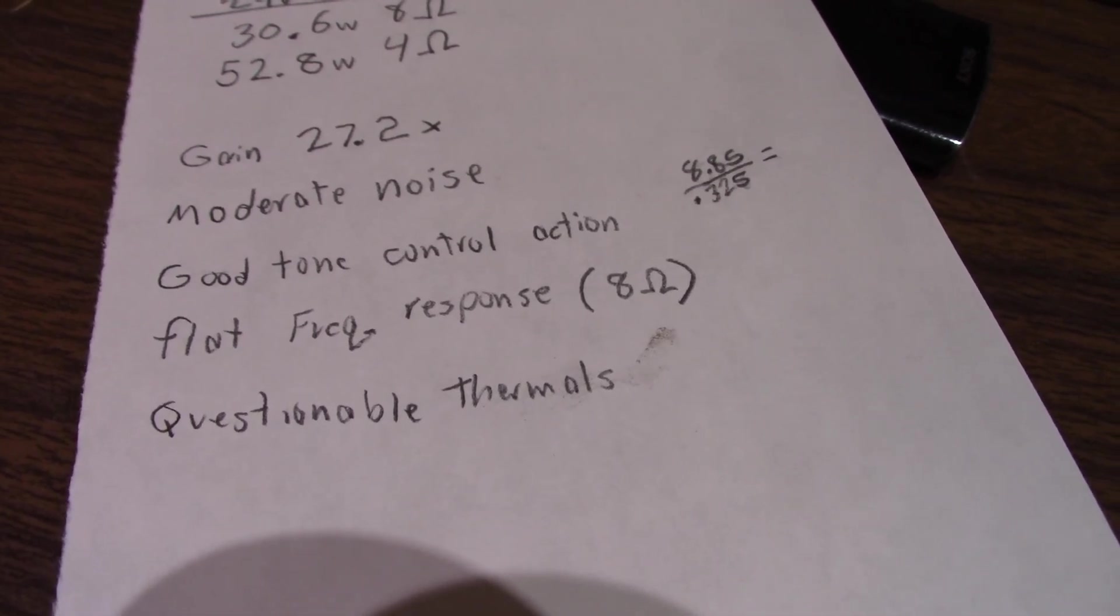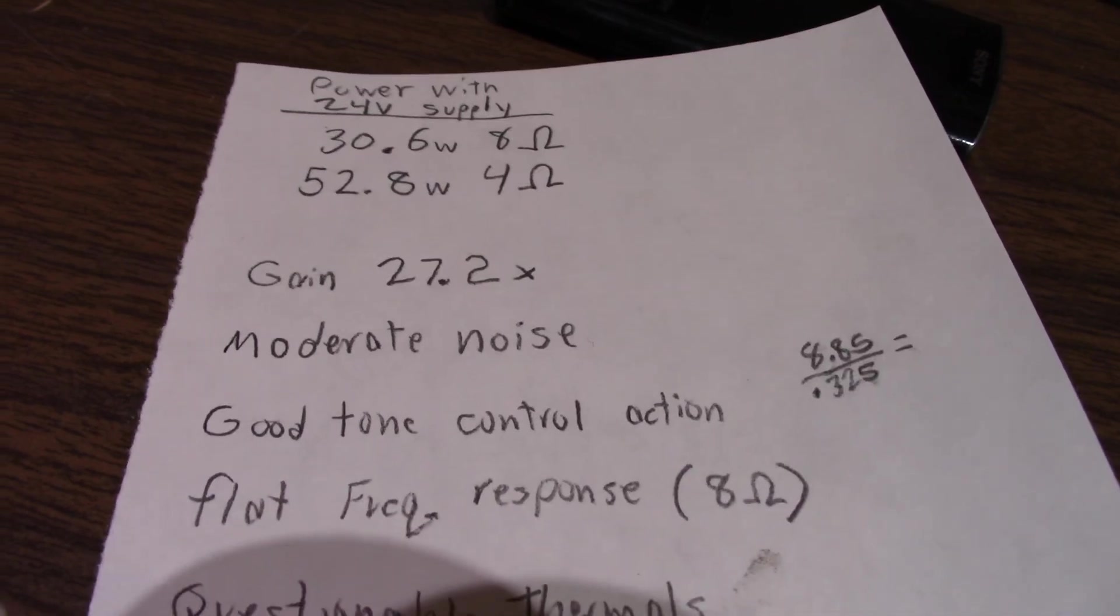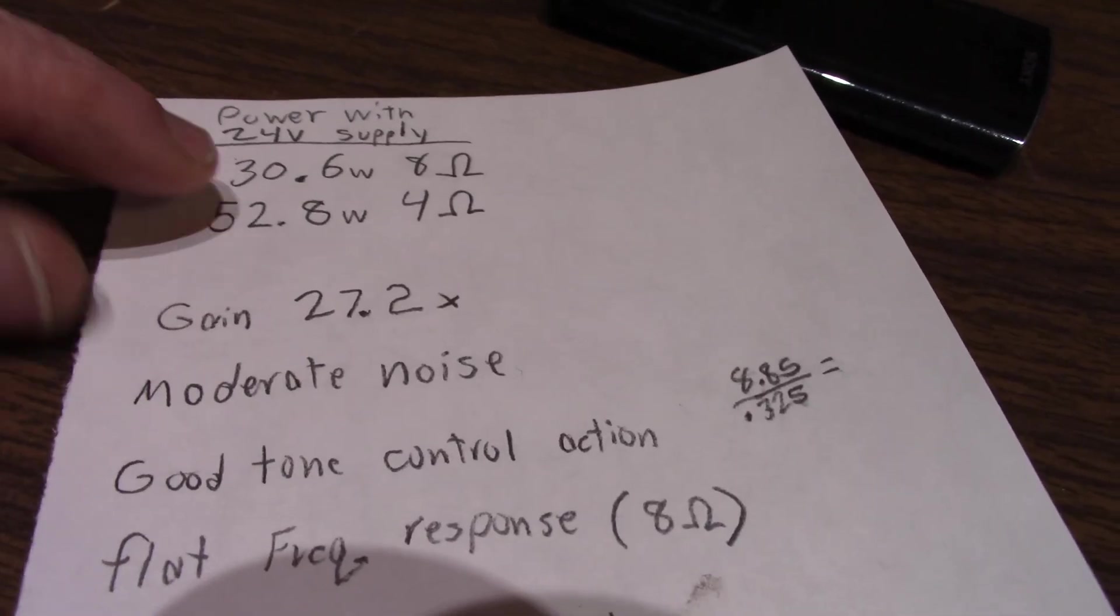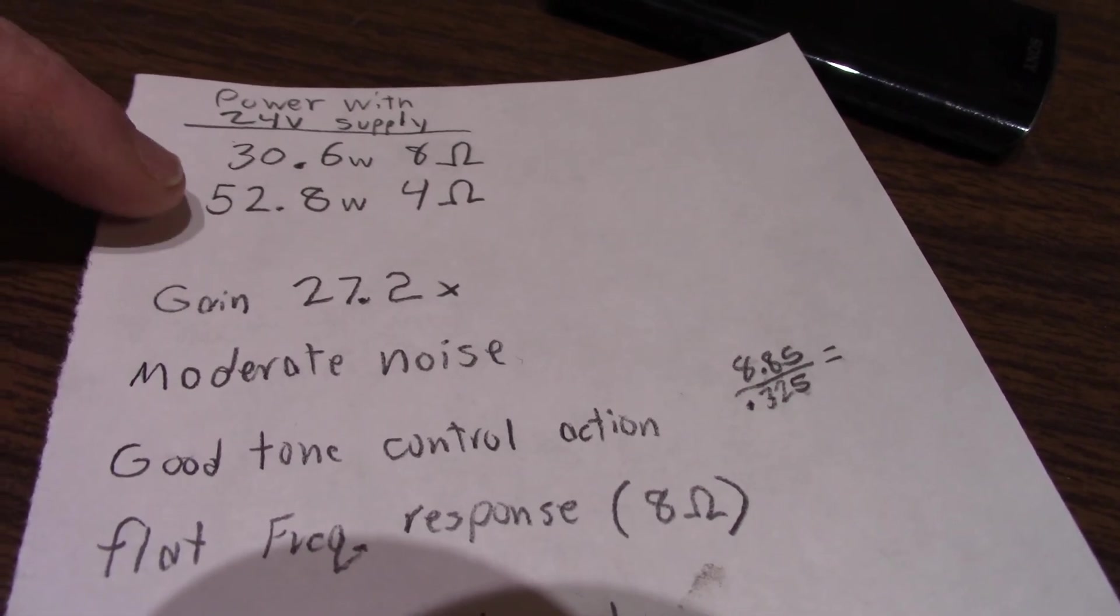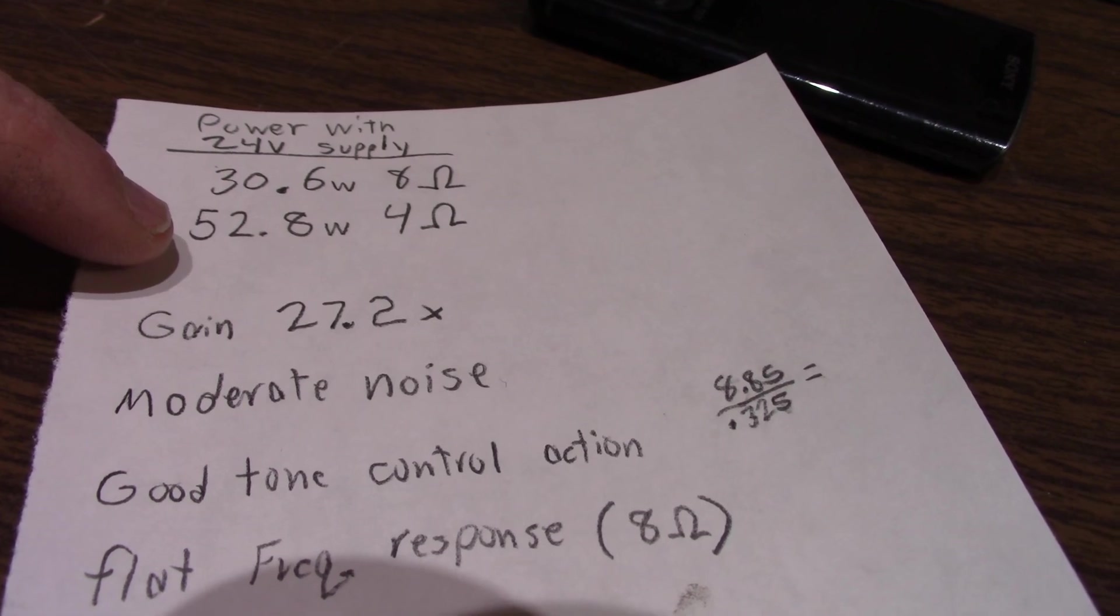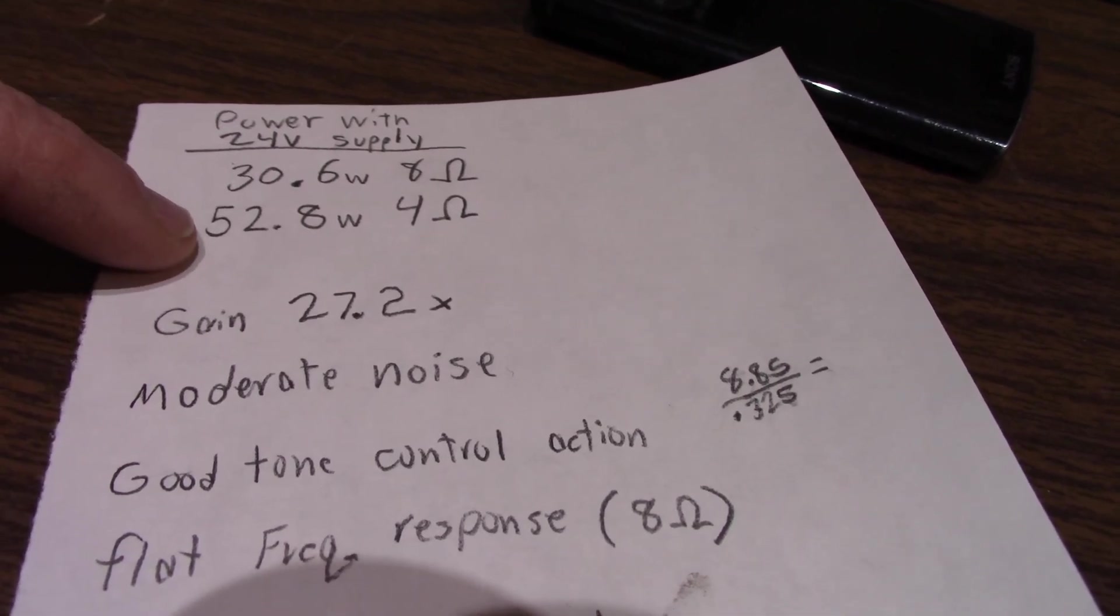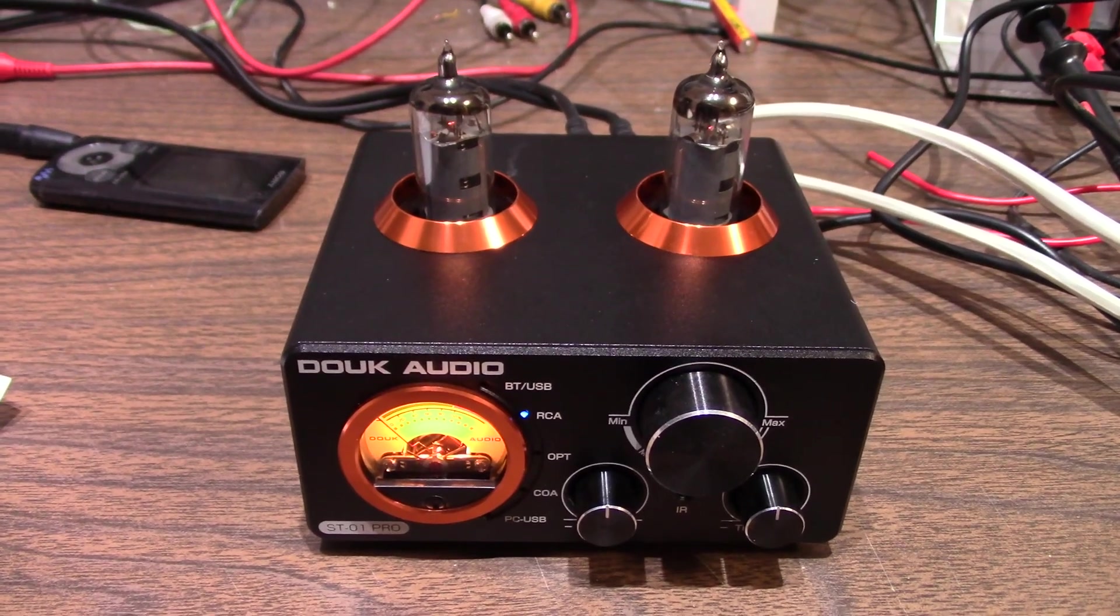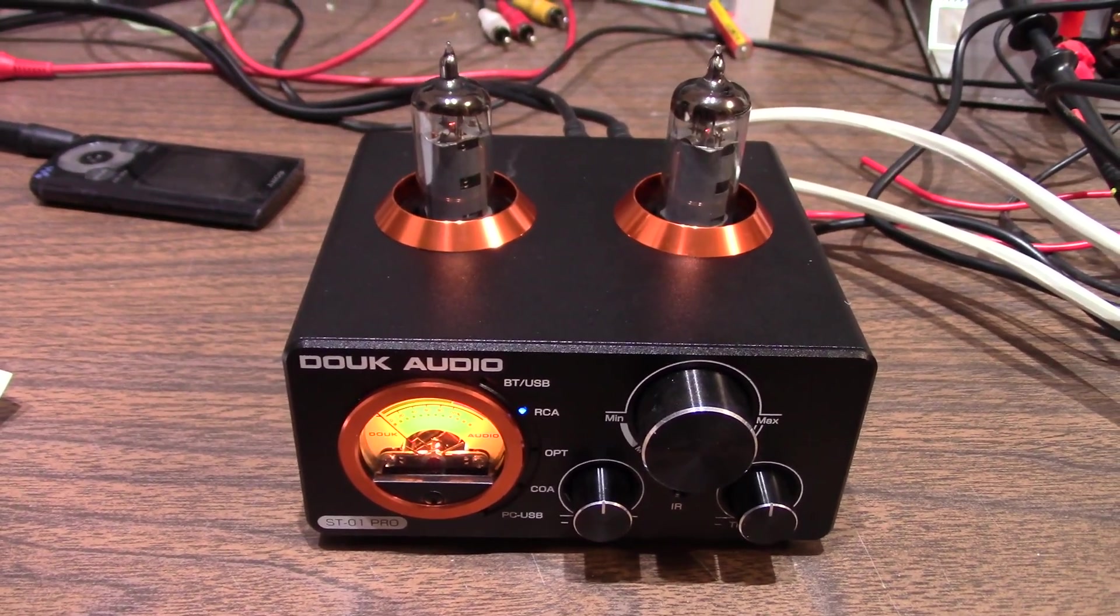Questionable thermals. I mentioned that, as I said earlier, with 4 ohm loads. If you're really going to push the amp, I wouldn't use 4 ohm speakers. You can certainly use 4 ohm speakers at lower volumes. But just remember the frequency response is 3 dB down at around 15 kHz. So that will do it for this one. Thanks for watching. Catch you on the next one.